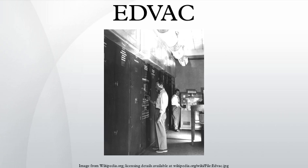EDVAC received a number of upgrades including punch card I/O in 1953, extra memory in slower magnetic drum form in 1954, and a floating-point arithmetic unit in 1958. EDVAC ran until 1961 when it was replaced by BRLESC. During its operational life it proved to be reliable and productive for its time.